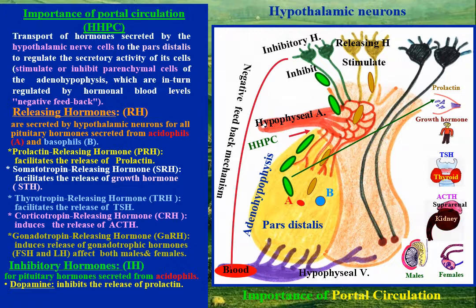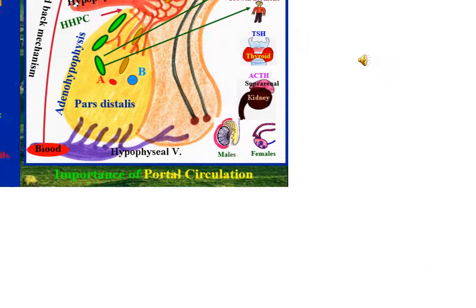Dopamine inhibits the release of prolactin. Somatostatin inhibits the release of growth hormone.